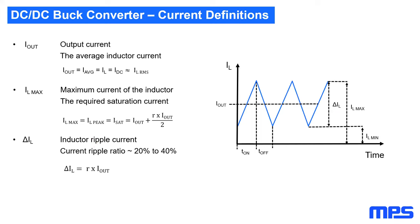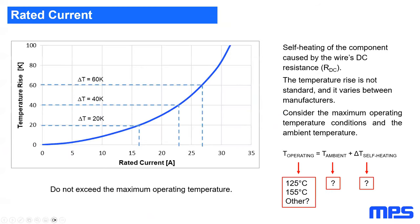Q: In the rated current slide, the Y-axis shows temperature in Kelvin. Does this make sense? A: Yes — whether the temperature rise is expressed in Kelvin or degrees Celsius, it's the same. A 20-degree temperature change in Celsius is exactly the same as 20 Kelvin. So the result is identical.